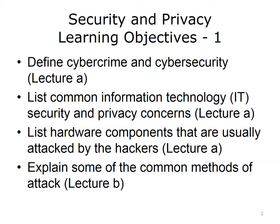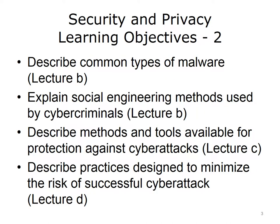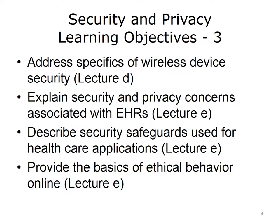The objectives for this unit, Security and Privacy, are to define cybercrime and cybersecurity, list common information technology (IT) security and privacy concerns, list the hardware components that are usually attacked by hackers, explain some of the common methods of attack, describe common types of malware, explain social engineering methods used by cybercriminals, describe methods and tools available for protection against cyberattacks, describe practices designed to minimize the risk of successful cyberattack, address specifics of wireless device security, explain security and privacy concerns associated with electronic health records (EHRs), describe security safeguards used for healthcare applications, and provide the basics of ethical behavior online.